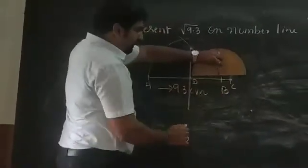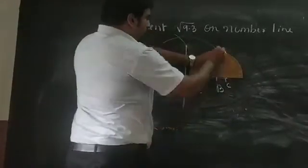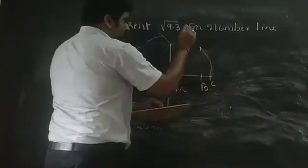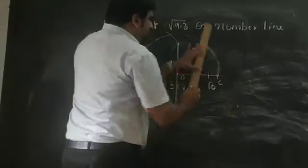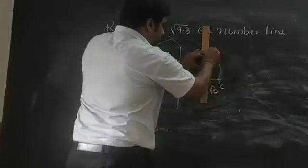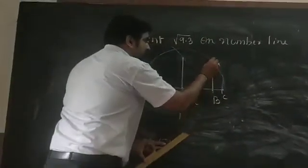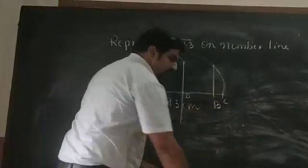Take a protractor and keep it in the point B. And draw 90 degrees. Join the line. So, if you cut the line here at this point, then,